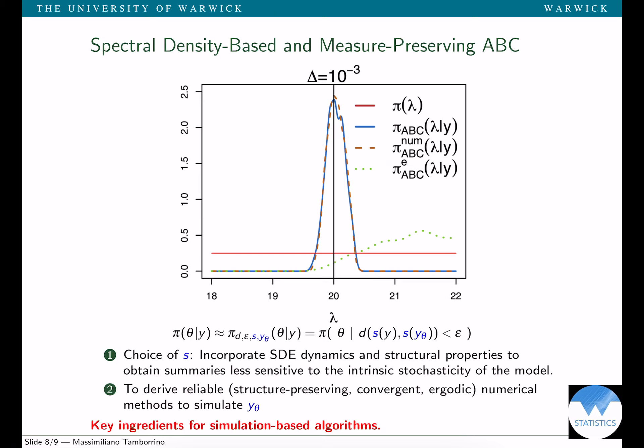If instead of exact simulation we use a numerical splitting method, the ABC posterior (the dashed orange line) is pretty much overlapping with the blue one obtained with exact simulation. While if we rely on Euler-Maruyama, even with a time step as small as delta equal to 10^-3, the ABC posterior is far off the blue line and far off from the true value lambda=20. The ABC posterior based on data simulated from numerical splitting methods are targeting the true value and overlapping with the ABC posterior generated under the exact simulation model.